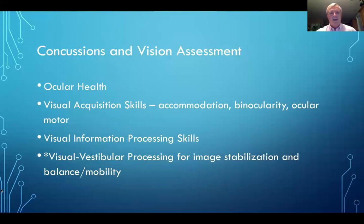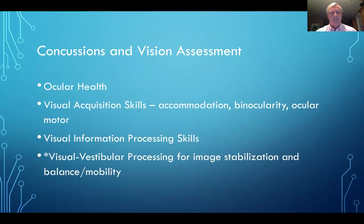So what do we need to assess? First, we need to check ocular health, then basic refraction and visual acuities. When we look at visual acquisition skills — those are skills of accommodation, binocular vision, and ocular motor skills — we use those to go out and get information about the environment to guide action. We're going to focus on visual vestibular processing for image stabilization and balance and mobility.